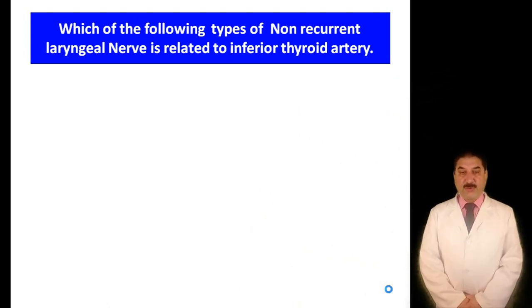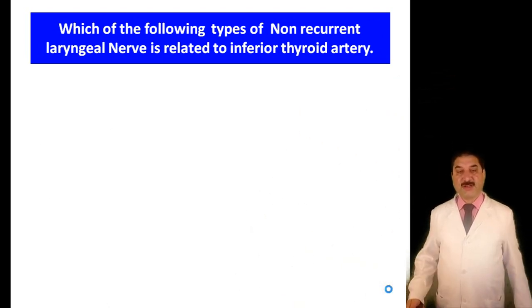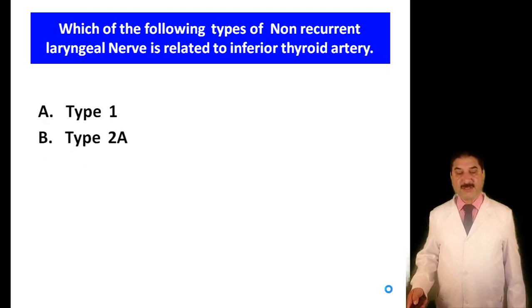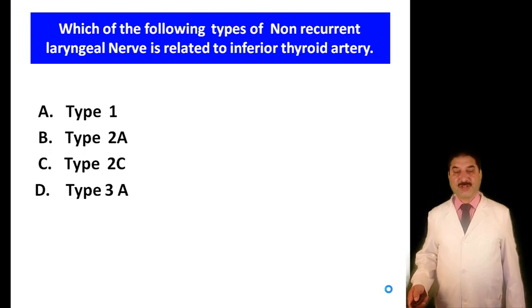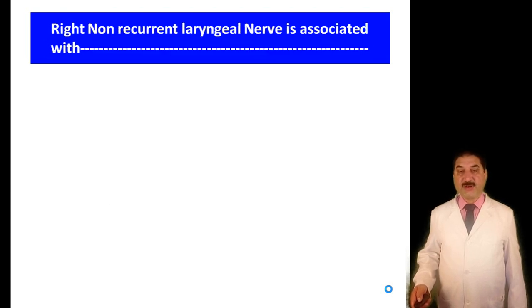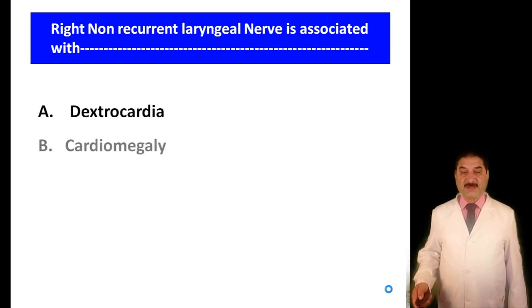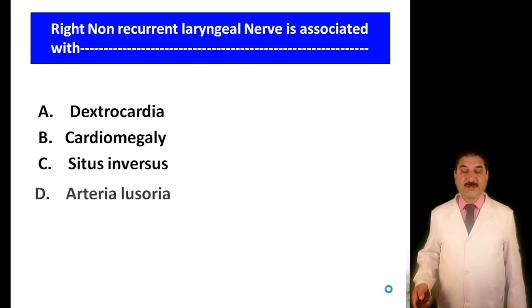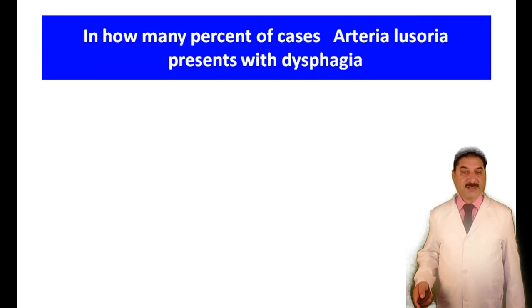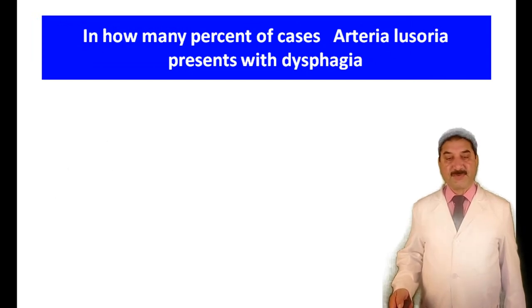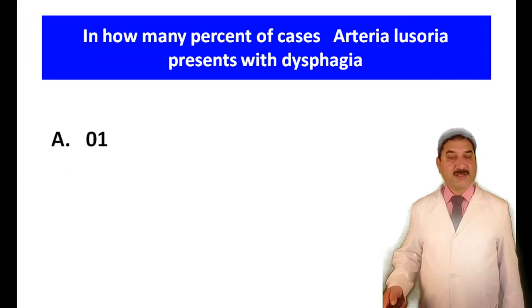Which type of non-recurrent laryngeal nerve is related to the inferior thyroid artery? Type 1, Type 2A, Type 2C, or Type 2B? Type 2A is the correct option. There is no Type 2C non-recurrent laryngeal nerve. Right non-recurrent laryngeal nerve is associated with: dextrocardia, cardiomegaly, situs inversus, or arteria lusoria? D — arteria lusoria — is the correct option. In what percentage of cases does arteria lusoria present with dysphagia? 1%, 5%, 10%, or 15%? 5% is the correct option.